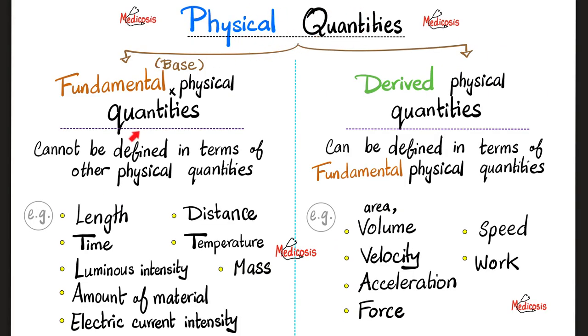In physics, we have quantities. Some of them are fundamental, like the seven fundamental quantities that we talked about: the length, the distance, the time, the temperature, the luminous intensity, the mass, the amount of material or the amount of matter, and the electric current magnitude. And we have derived physical quantities that we can derive from the fundamentals. For example, look at area. What is area? Area is simply length multiplied by something similar, width. Length by width will give you area. How about volume? You multiply length three times. So it's length times width times height. How about speed? Speed is distance over time. How about velocity? It's displacement over time.